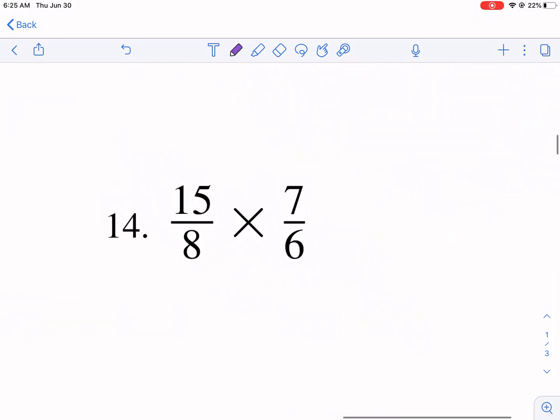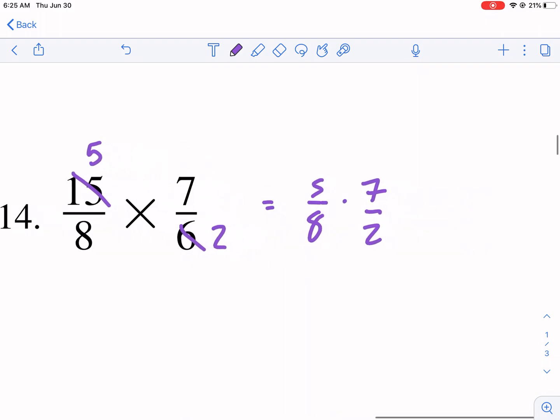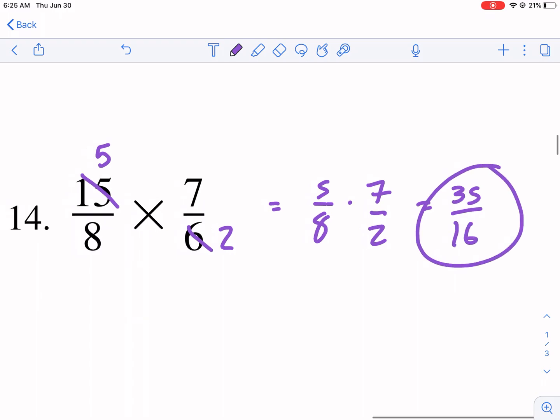Applying that same principle to number 14, if we cross off 15 and 6, they have a common factor of 3. If I divide 15 by 3, I get 5. And if I divide 6 by 3, I get 2. So now the problem is 5 over 8 times 7 over 2. Much easier to do. We have 35 over 16. And that's our final answer.